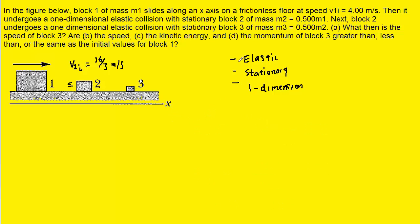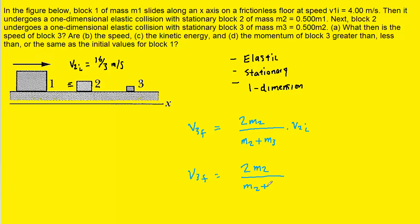That second collision also satisfies the three important conditions. So we can say that the final velocity of block 3 is going to equal twice the value of m2 divided by the total mass times the initial velocity of block 2. We don't actually have values for the masses, but it turns out it won't matter, so we'll just keep m2 the same. Then m3 is half the value of m2, and we're multiplying by the initial velocity of block 2, which was 16/3 meters per second.